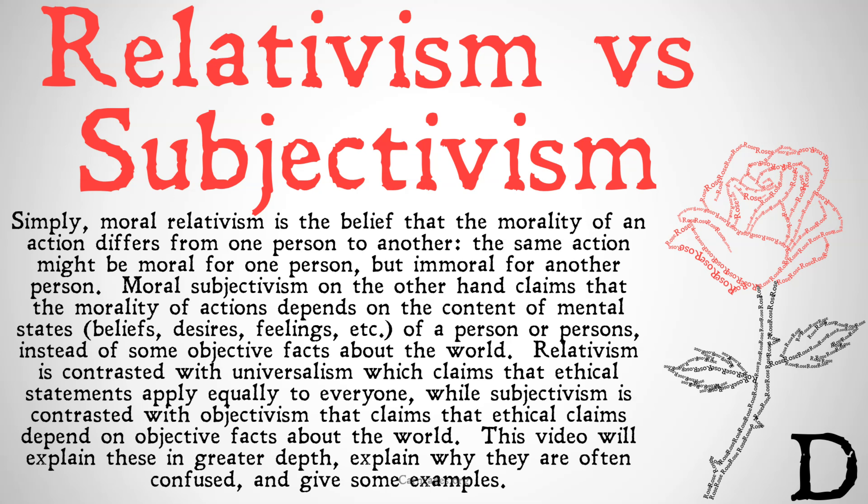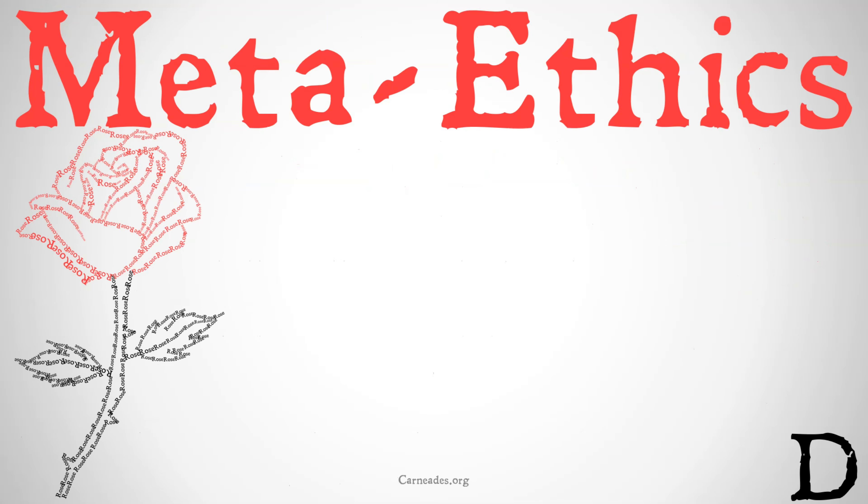Relativism is contrasted with universalism, which claims that ethical statements apply equally and the same to everyone. Subjectivism is contrasted with objectivism, which claims that ethical claims depend on objective facts about the world, as opposed to subjective mental states in different people's heads. This video will explain these two positions in greater depth, explain why they are often confused, and give a couple of examples.